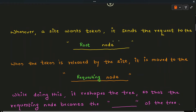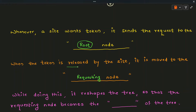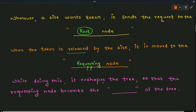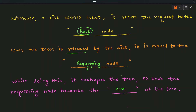Whenever a site wants the token, it sends a request to the root node. Once the root node finishes execution inside the critical section, it releases the token and gives it to the requesting node. While doing this, it reshapes the tree so that the requesting node becomes the new root node. The philosophy of Raymond's algorithm is that the node executing the critical section holds the token and is the root node of the tree.